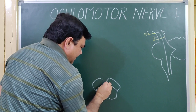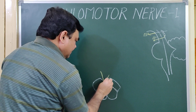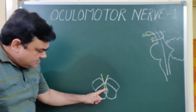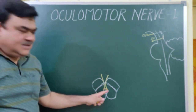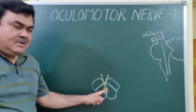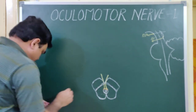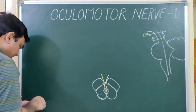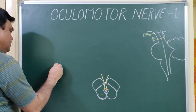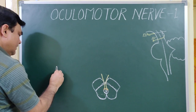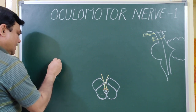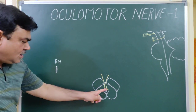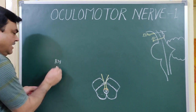The oculomotor nerve arises like this from both sides. This is known as the oculomotor nerve nuclear complex, or the oculomotor nuclear complex. If you enlarge this part, you will find the position of the Rife nucleus.